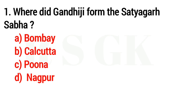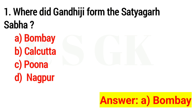Question 1. How did Gandhiji form the Satyagraha Sabha? The answer is option A: Bombay.